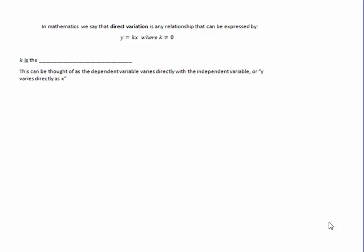We're looking at the 5.2 guided notes. This section is about direct variation, and in mathematics we say that direct variation is any relationship that can be expressed by the equation y equals kx, and obviously k can't be 0, so I like to ignore these in general. This is the part I'm really worried about.